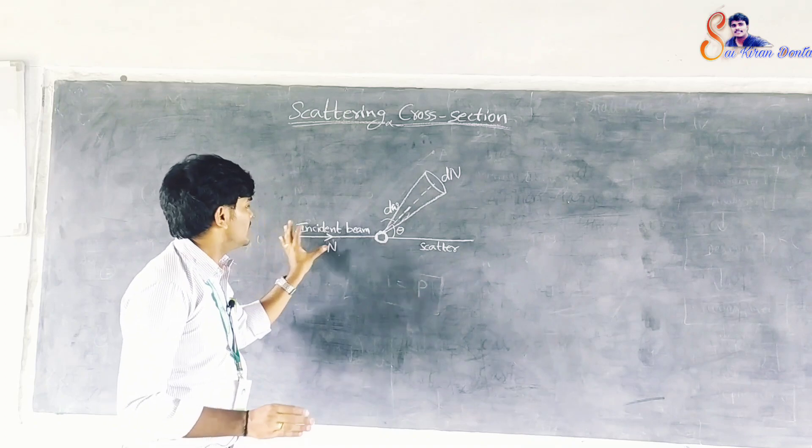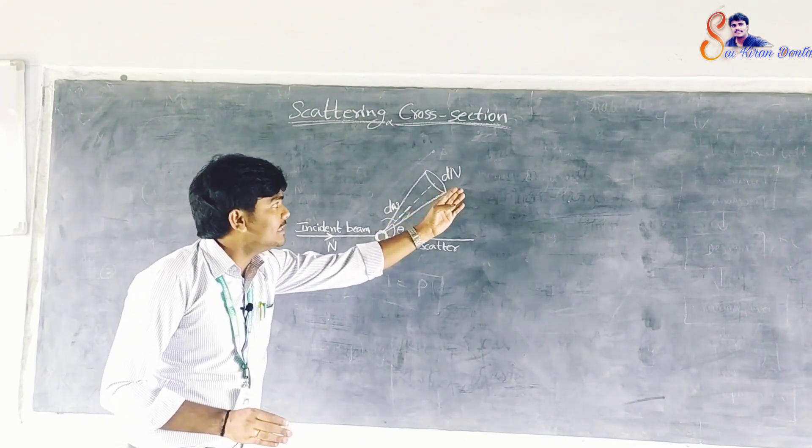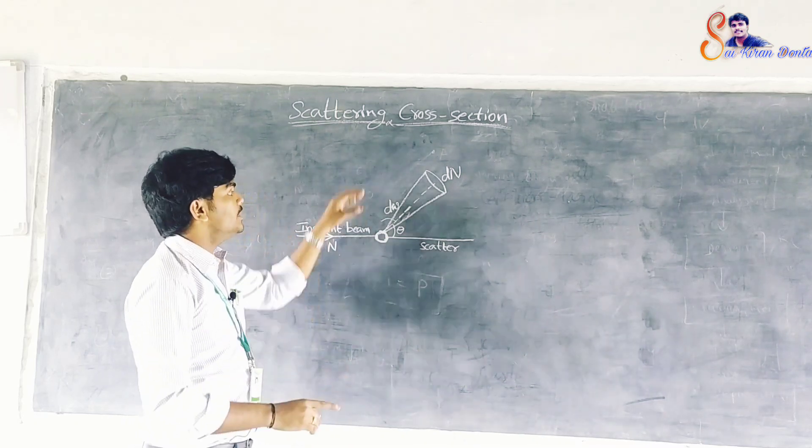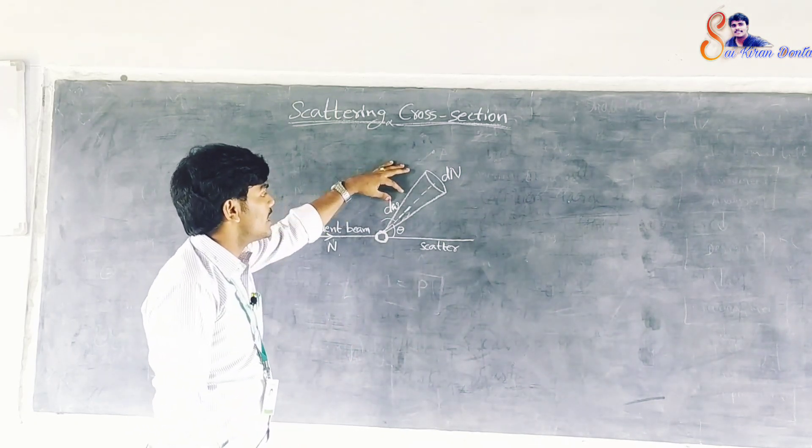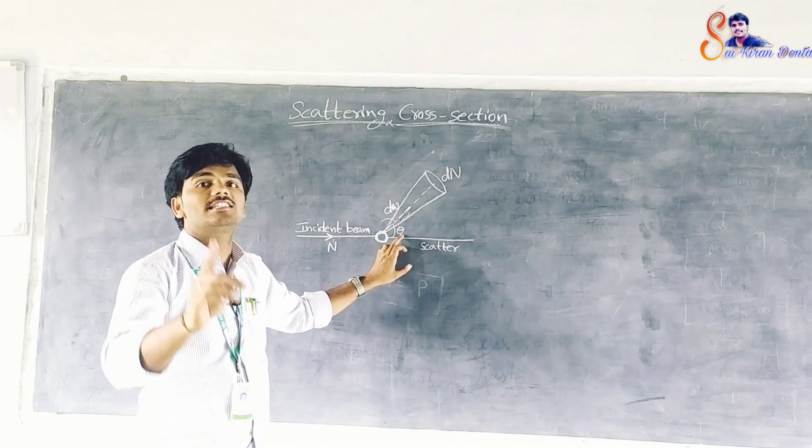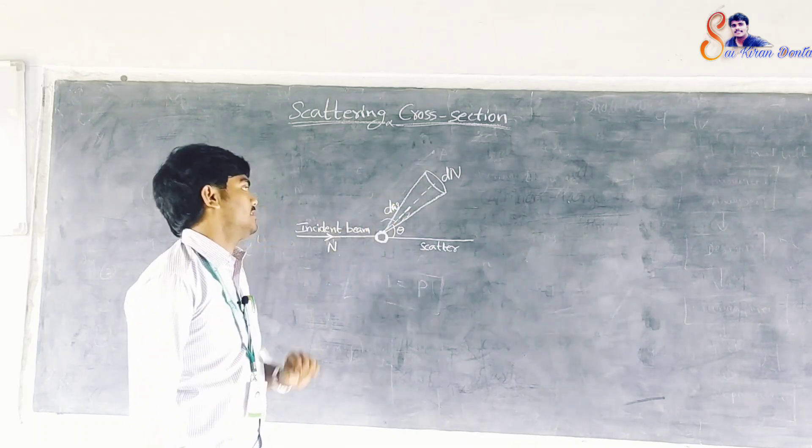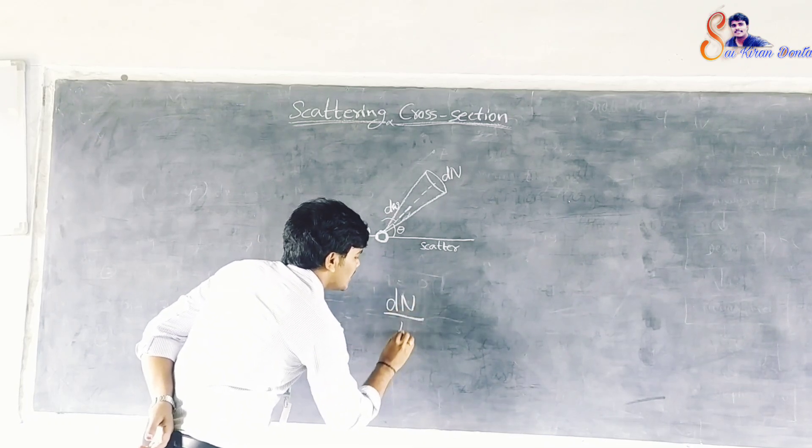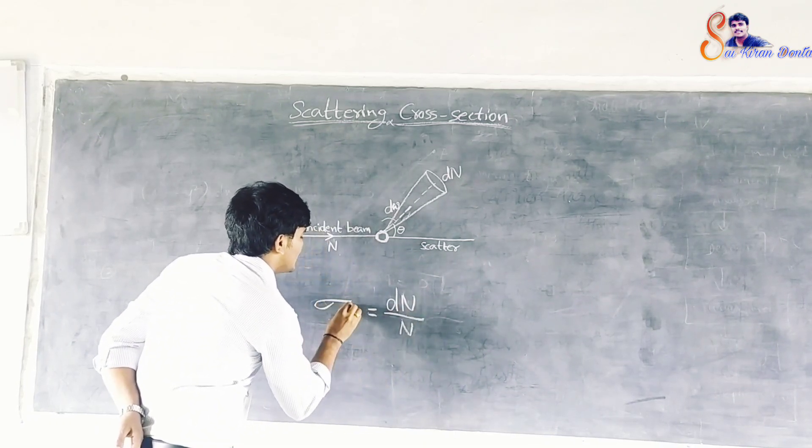Let N be the incident intensity and Dn be the number of particles scattered per unit time into a solid angle D omega in the direction of theta with respect to the bombarding direction. Now, the ratio Dn by N is called scattering cross section.